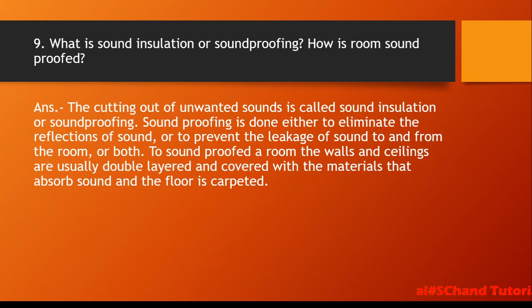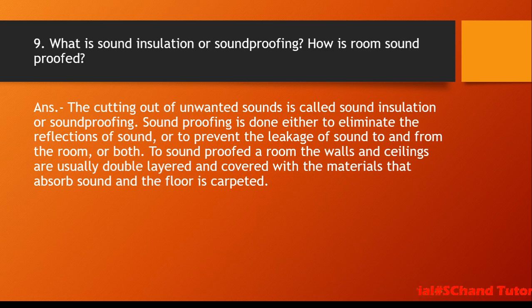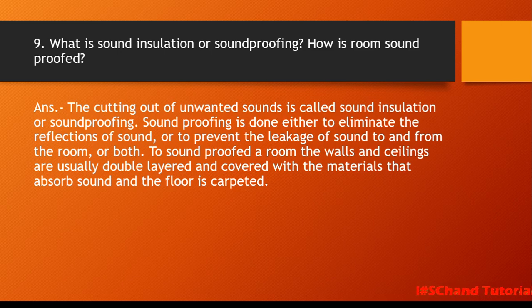Next: what is sound insulation or soundproofing, and how is a room soundproofed? The cutting out of unwanted sound is called sound insulation or soundproofing. Soundproofing is done either to eliminate reflection of sound, or to prevent leakage of sound to and from the room, or both. To soundproof a room, walls and ceiling are usually double-layered and covered with sound-absorbing materials, and the floor is carpeted. In auditoriums and cinema theaters, special materials are placed on walls to avoid reflection of sound.